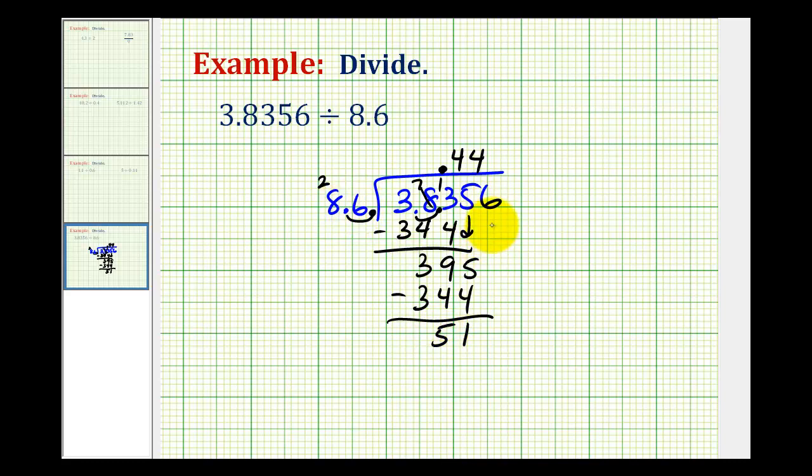And now we're going to bring down the last digit. So we have 516. We want to know how many 86's there are in 516. Well if 4 times 86 was 344 let's try 6. 6 times 6 would be 36. Now we carry a 3. And 6 times 8 is 48 plus 3 that's 51. And this works out perfect because this difference is 0.